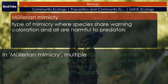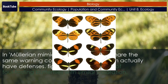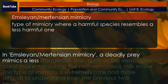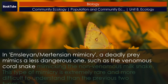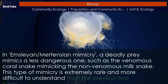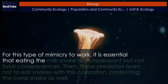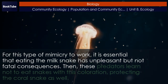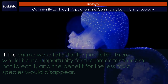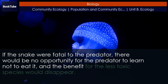In Müllerian mimicry, multiple species share the same warning coloration, but all of them actually have defenses. In Emsleyan/Mertensian mimicry, a deadly prey mimics a less dangerous one, such as the venomous coral snake mimicking the non-venomous milk snake. This type of mimicry is extremely rare and more difficult to understand. For this type to work, it is essential that eating the milk snake has unpleasant but not fatal consequences, so predators learn not to eat snakes with this coloration, protecting the coral snake as well. If the snake were fatal to the predator, there would be no opportunity to learn, and the benefit for the less toxic species would disappear.